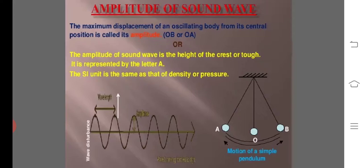The maximum displacement of an oscillating body from its central position is called its amplitude. The amplitude of sound wave is the height of the crest or trough. If it is represented by letter a, the SI unit is the same as that of density or pressure.